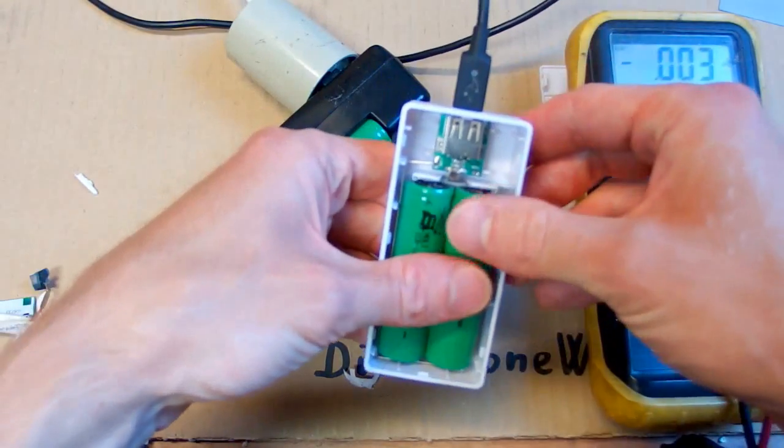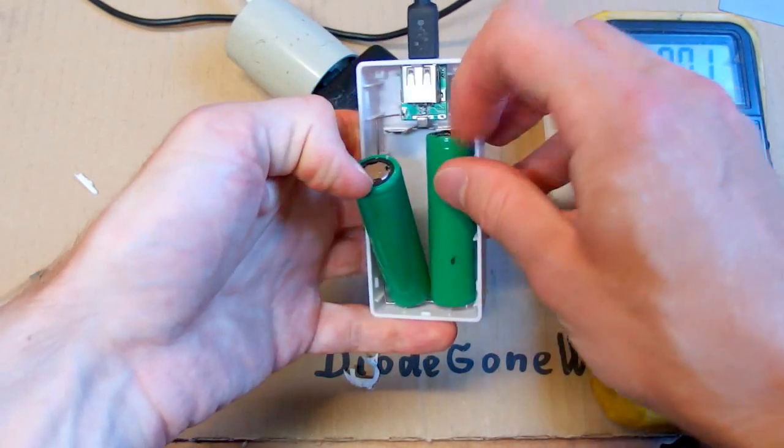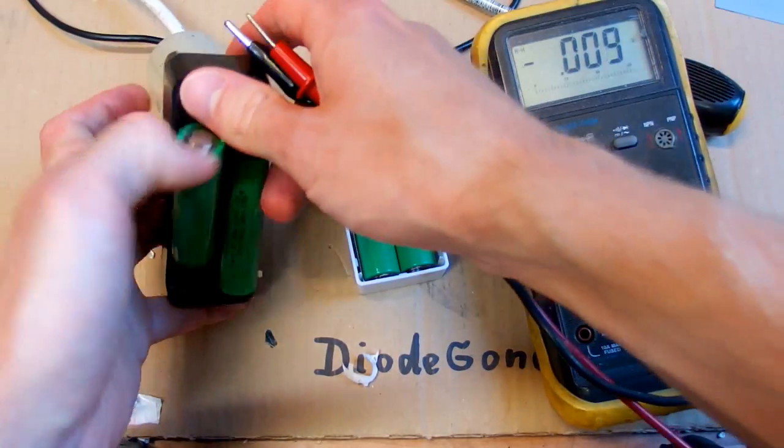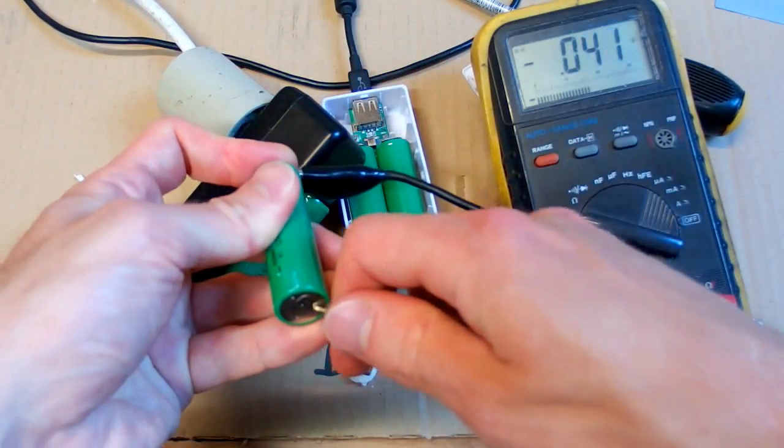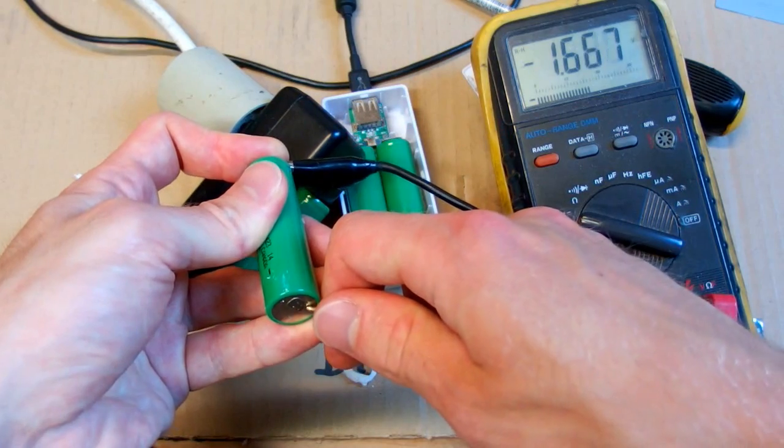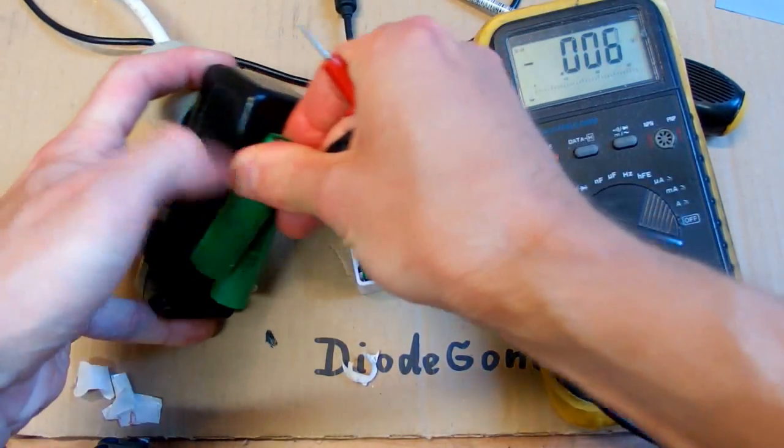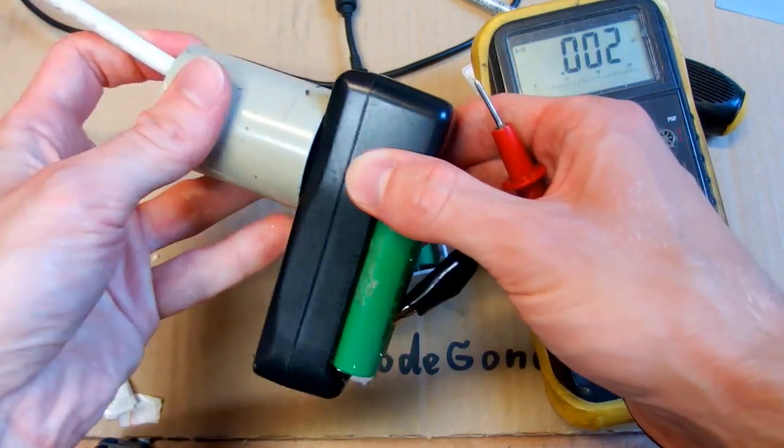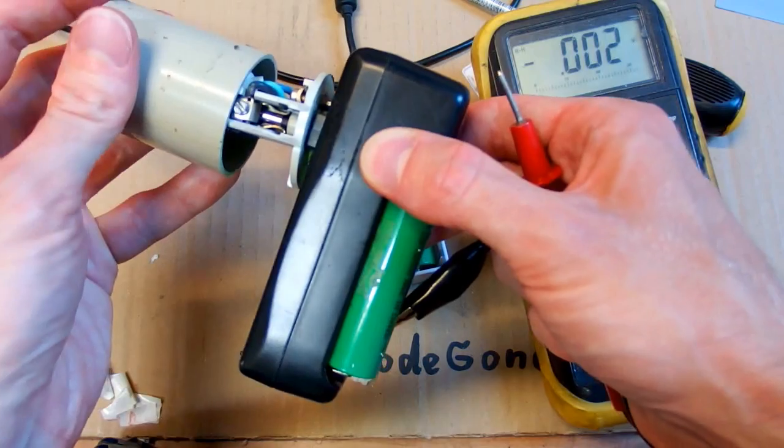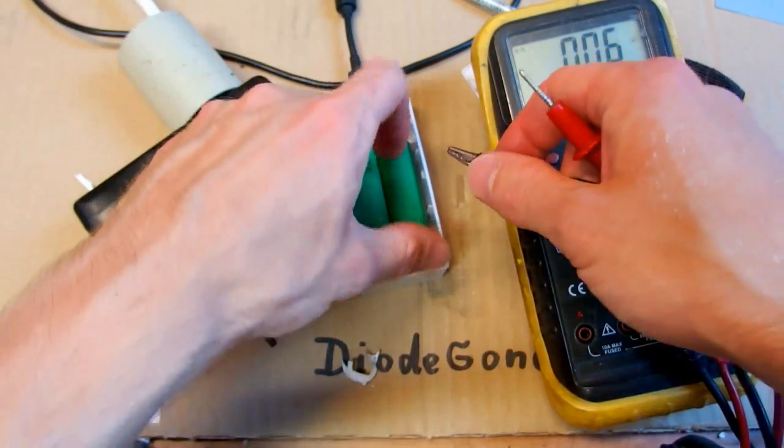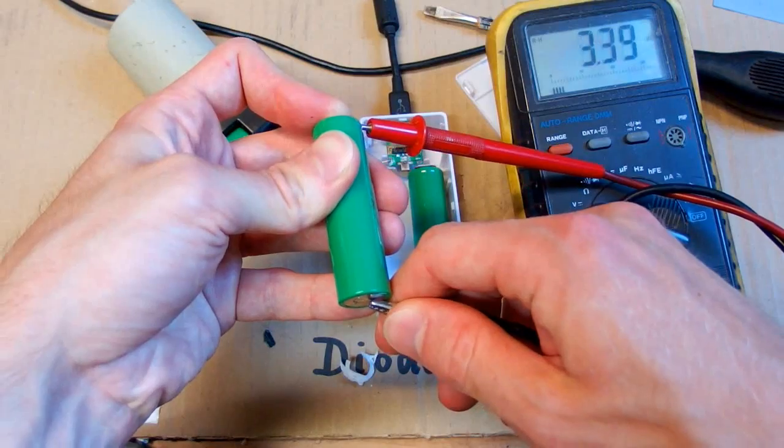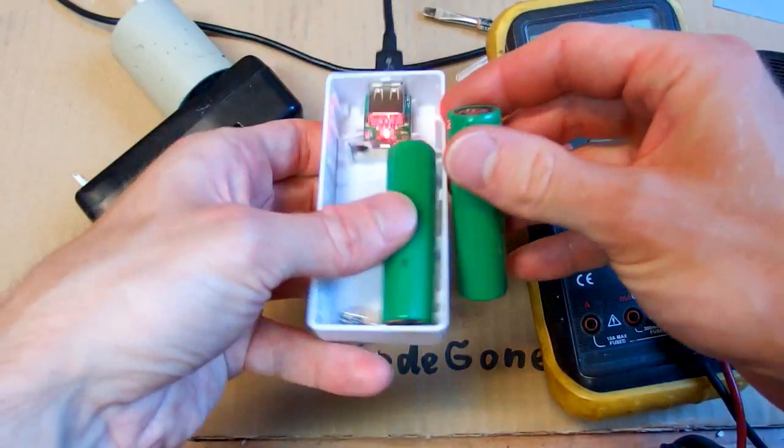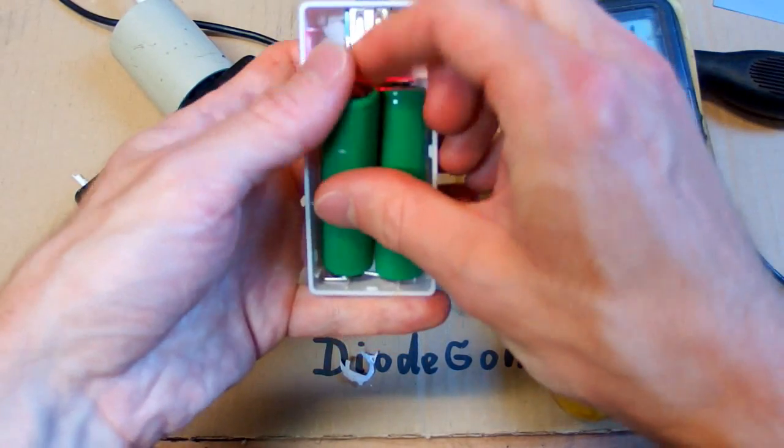And the other two are in this power bank, which can work as a charger, because it doesn't have its own batteries. And those batteries are 1.67 volts. And this is definitely not the safest charger. And those are 3.4.